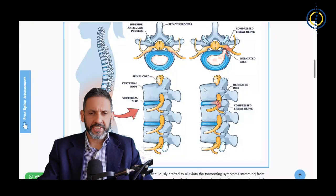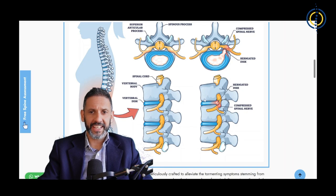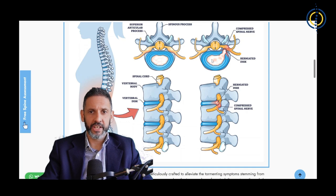In this diagram we can see the stack of bones that make up the spine, and in between the bones are these soft cushions called the discs. Here we can see a disc herniation pinching the nerve, and here's a cross section again showing the disc herniation trapping the nerve — and this is what causes sciatica.